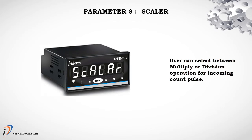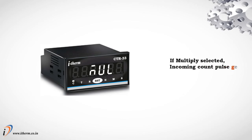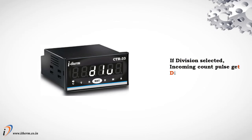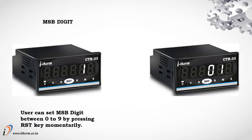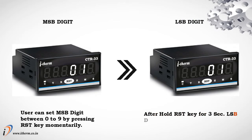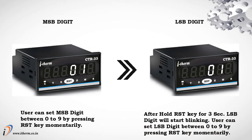Parameter 8: Scalar. The user can select between multiply or division operation for the incoming count pulse. If multiply is selected, the incoming count pulse gets multiplied by the factor selected by the user. Parameter 9: Scale Factor. This sets the factor value for multiply or division. The minimum factor value is 1 and the maximum is 99. The user can set the MSP digit between 0 to 9 by pressing the reset key momentarily. After holding the reset key for 3 seconds, the LSP digit will start blinking and can be set between 0 to 9.